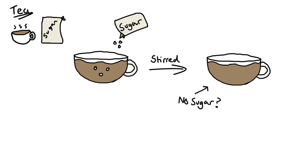But has the sugar actually disappeared? Well, the answer is no. The sugar is still there, but we can no longer see it. The sugar is said to have been dissolved in the tea.